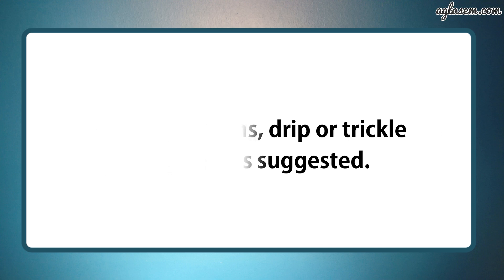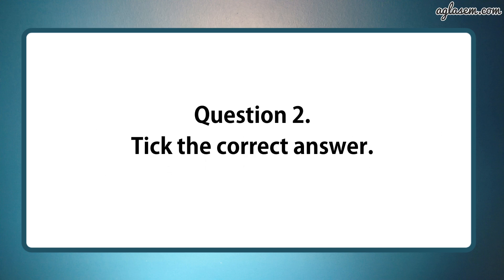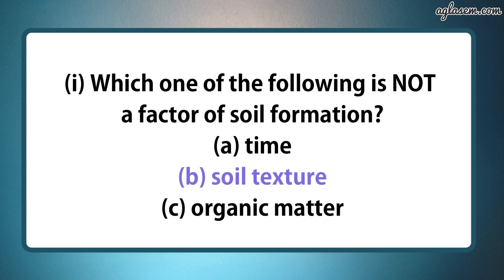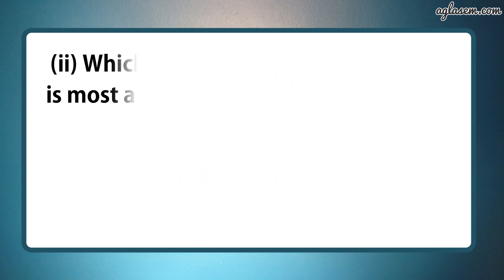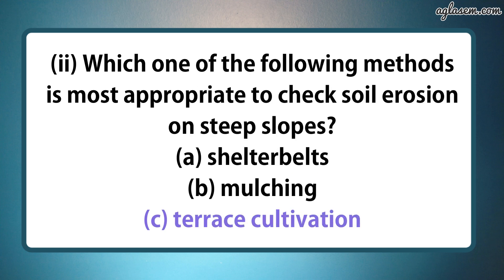Moving to question number two, tick the correct answer. Part one: which one of the following is not a factor of soil formation? One, time. Two, soil texture. Three, organic matter. The answer is two, that is soil texture. Second part: which one of the following methods is most appropriate to check soil erosion on steep slopes? First, shelter belts. Second, mulching. Third, terrace cultivation. The answer is third, that is terrace cultivation.